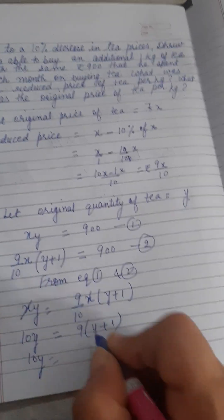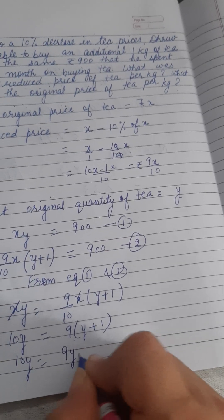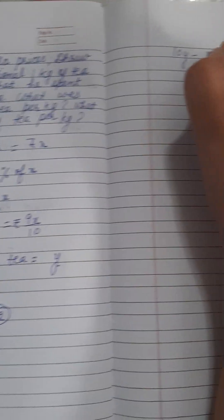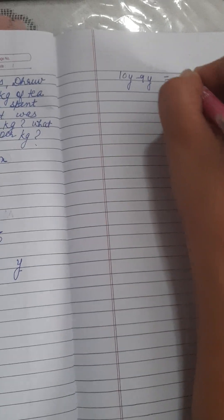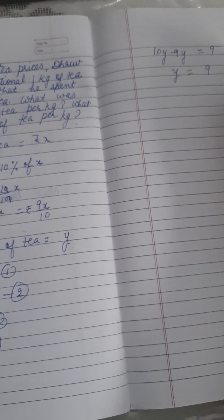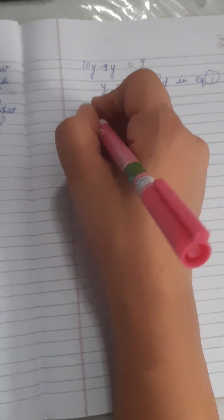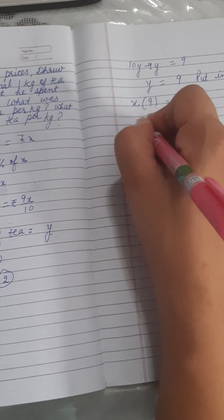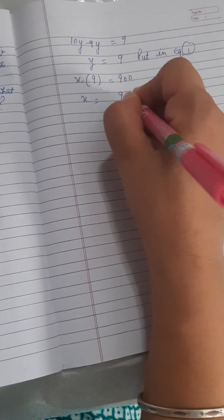10Y is equal to 9 multiply with Y plus 1. It is 9Y plus 9. 9Y is subtracted from 10Y, it is equal to 9. So Y equals 9. Right, now substitute the value here in equation 1. Put in equation 1: X into 9 is equal to 900. X is equal to 900 over 9.